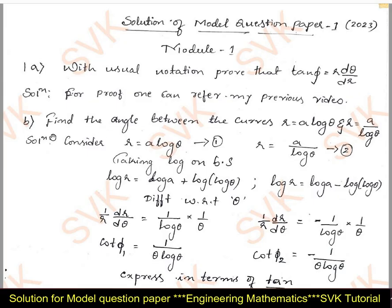Moving to question number 1b: find the angle between the curves r = a·log θ and r = a/log θ. Here they have provided two curves and we are required to find the angle between these two curves.